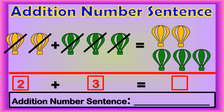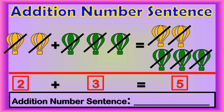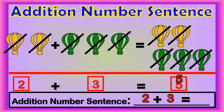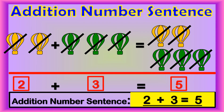Then count the yellow and green balloons together. One, two, three, four, five. There are five balloons in all. Now we write two plus three equals five. So, the addition number sentence is two plus three equals five.